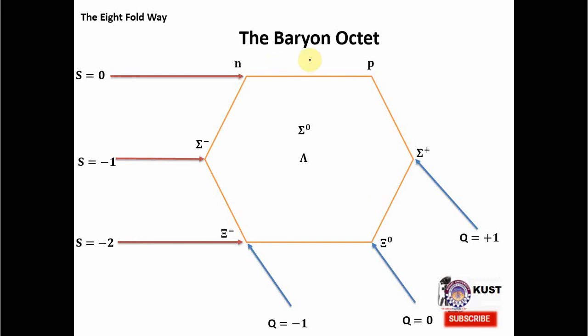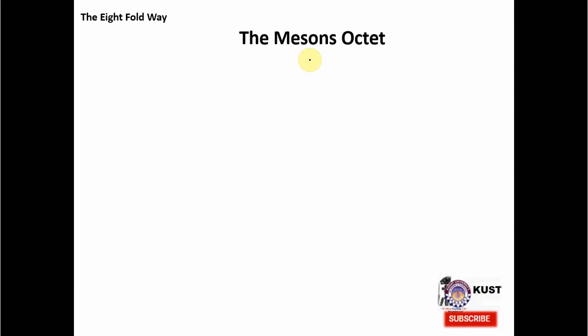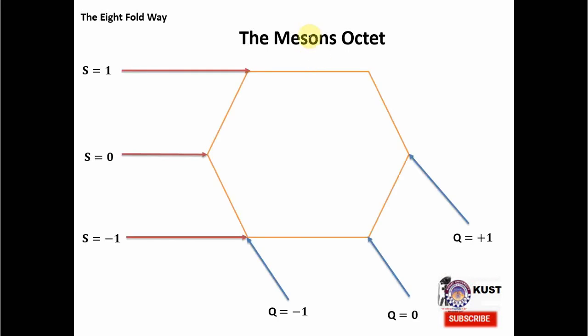So this was the octet created for baryons. Can we create an octet for mesons? Yes, we can do that, and in the next example we create this. But here you can see that assignment of strangeness with these straight lines is not really a strict process and it is arbitrary, because now we are starting from S = +1. In the previous example, we started from S = 0, but it depends on the requirement.